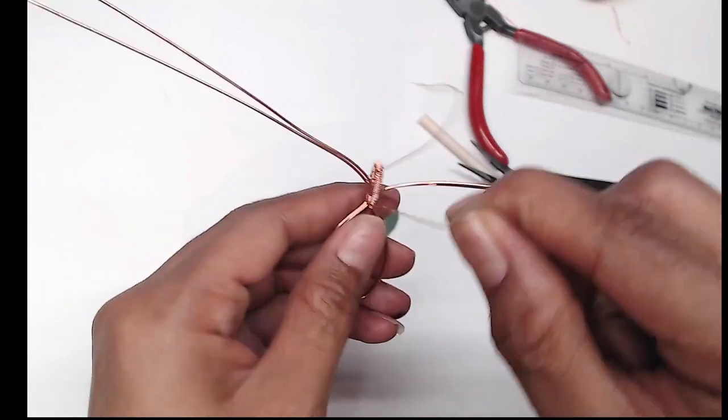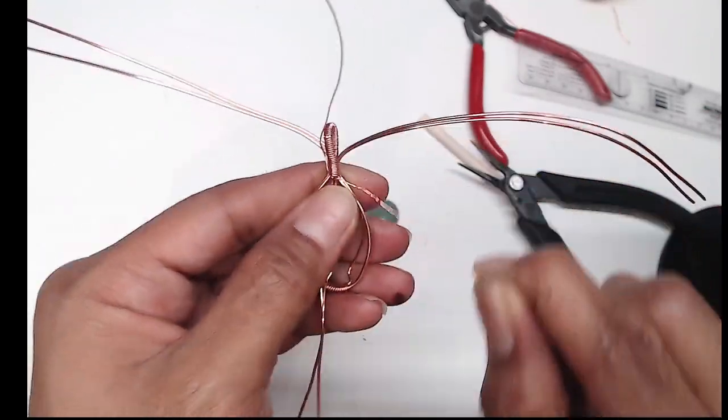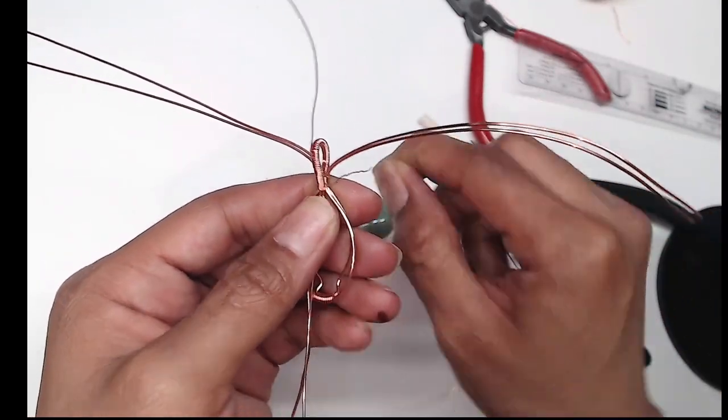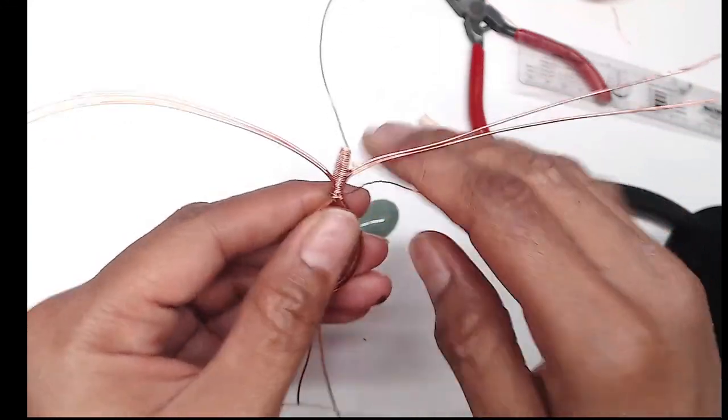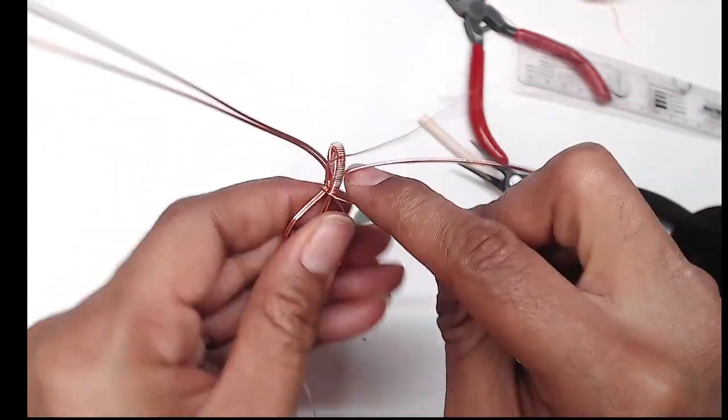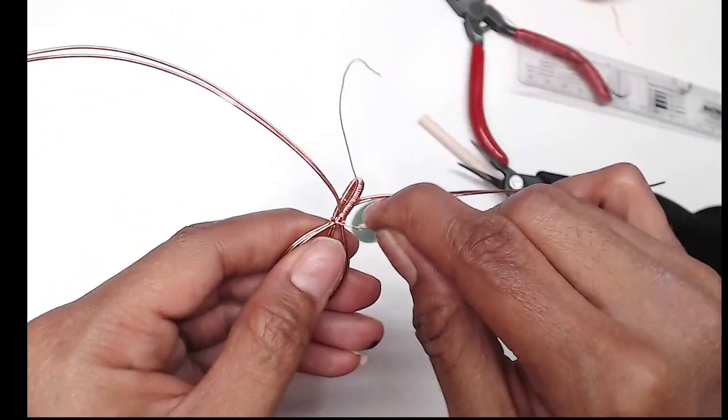Once in place you should still have the tail from our 26 gauge to connect it all together. So wrap it around the entire thing, the front and the back, and this will keep your little loop in place for your chain.